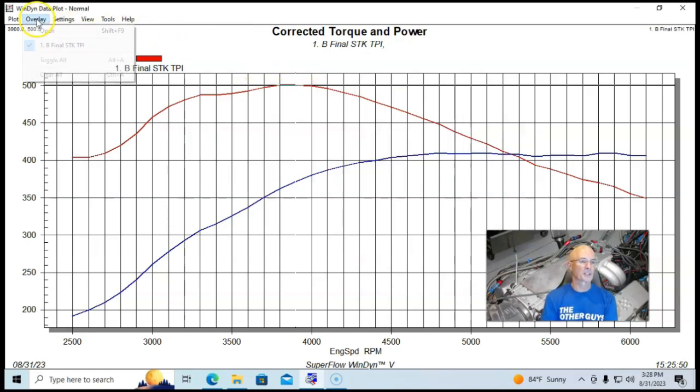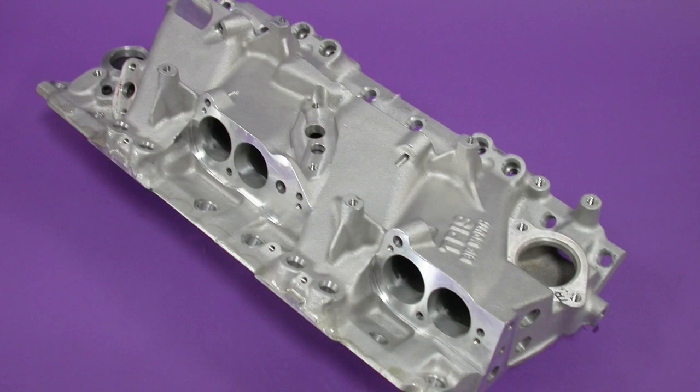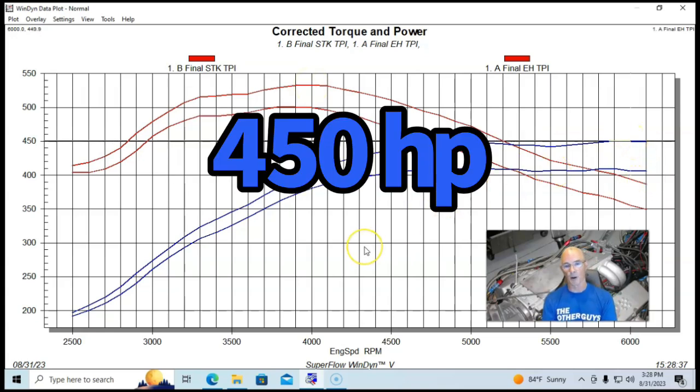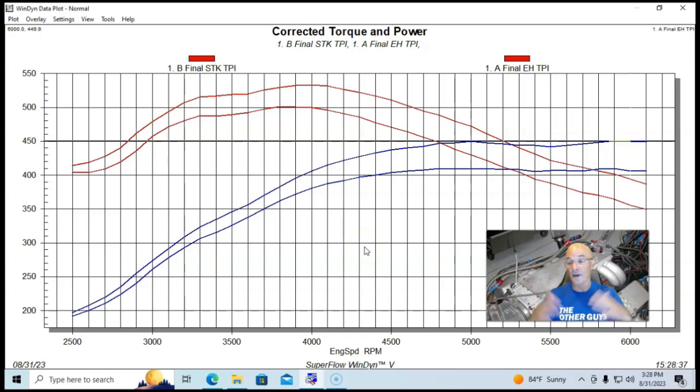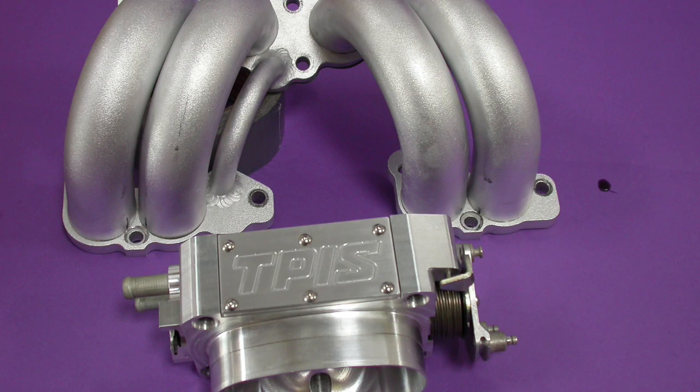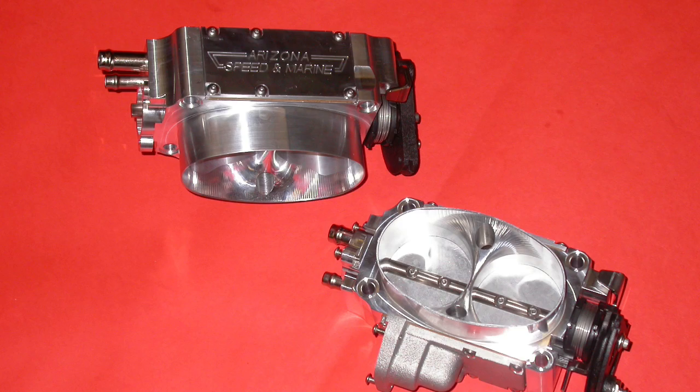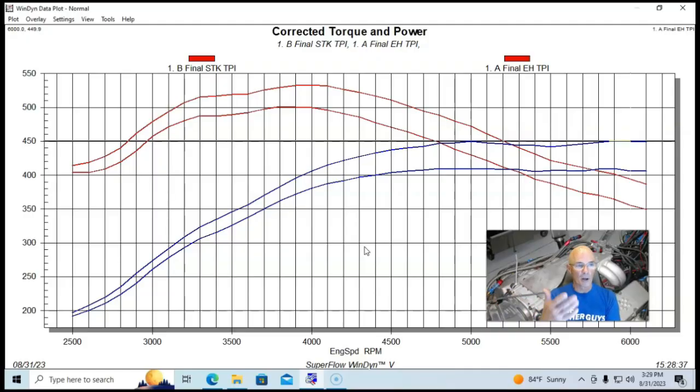But here's what happened after we installed one of the ported versions. We were up to 533 foot-pounds of torque and 450 horsepower. So you can see the 383 responded very well to having more airflow. The curves are very similar, making peak power and peak torque right near the same RPM. All we did was make the tubes bigger, ported the lower manifold, port matched the plenum, and had a bigger throttle body.